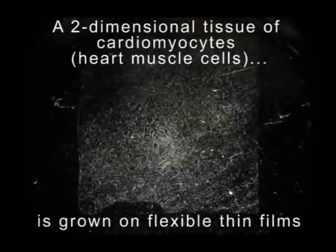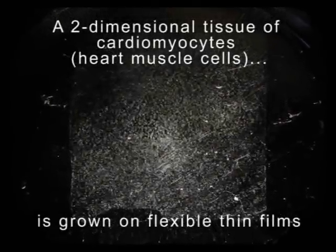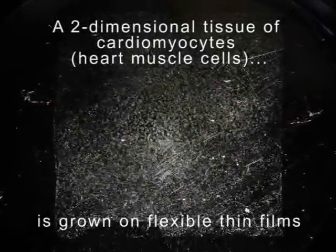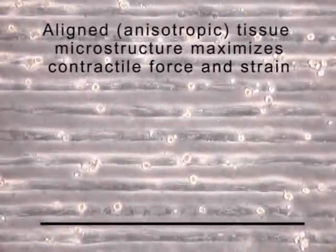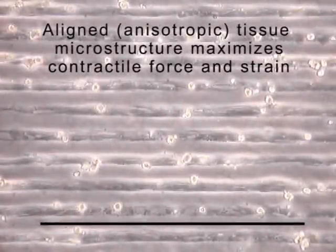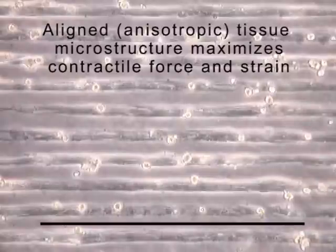We start by growing a two-dimensional tissue of cardiomyocytes, or heart muscle cells, onto a thin film elastomer of polydimethylsiloxane. The cardiomyocytes are microengineered into 20 micron wide muscle strips using soft lithography. We can see that the cardiomyocytes are well aligned into an anisotropic tissue where the microstructure maximizes contractile force and strain along a single axis.